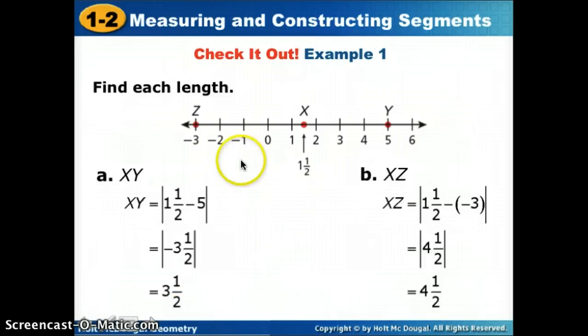Here's X to Z. You can start with either one. Since they labeled it XZ, they started with X's location, 1 and 1 half, minus a negative 3. A negative minus a negative becomes a positive. So we say 1 and 1 half plus 3 gives us 4 and 1 half. 4 and 1 half's absolute value is 4 and 1 half.